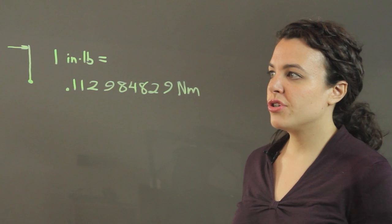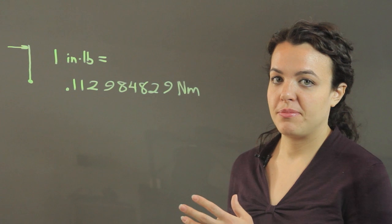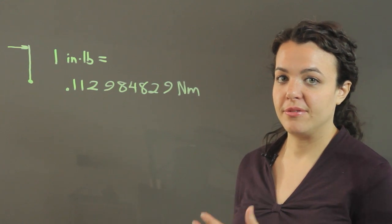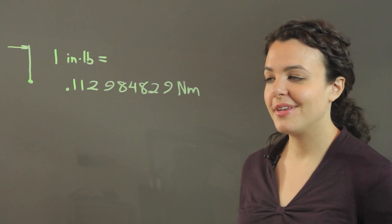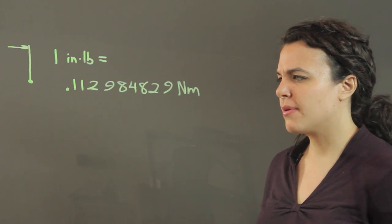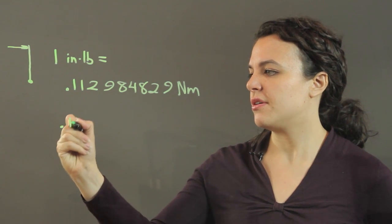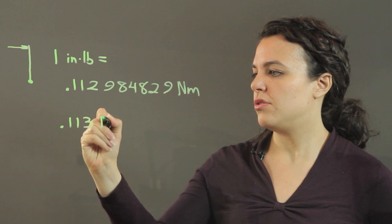So, we'll usually do this conversion because newton-meters is the SI unit for torque, meaning System Internacional or International System that we use for units. So, I'm going to round to 0.113 newton-meters.